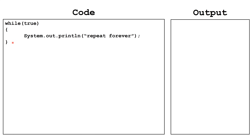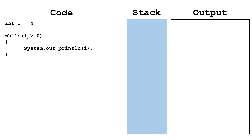Now let's look at a slightly more complex while loop. This one says while i is greater than zero. We see i is initialized to four, so it will run, execute the code in the body, go back up to the top, and evaluate to true again. Because the value of i is never changed inside the body of the loop, this loop will also run forever. If we add a command to decrement the value of i, the loop will no longer run forever. We could write a very similar loop using a for loop.